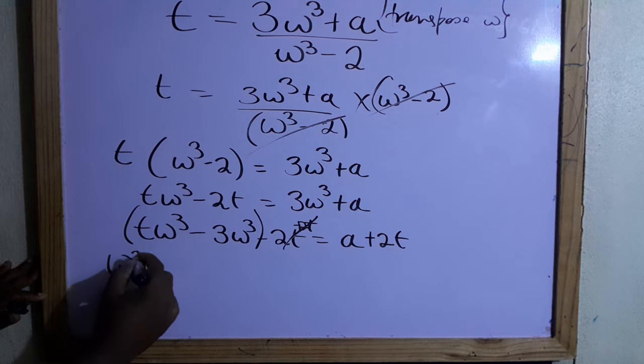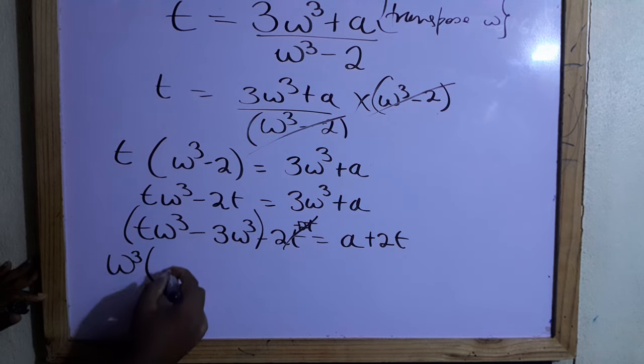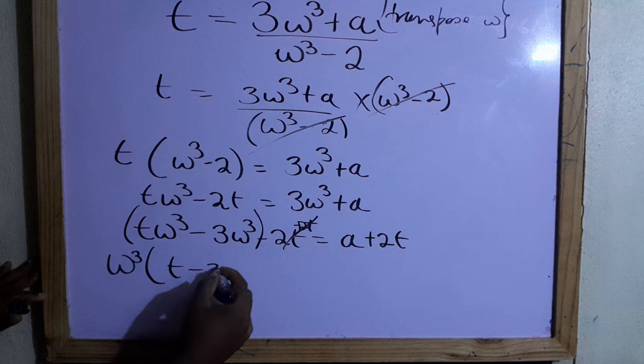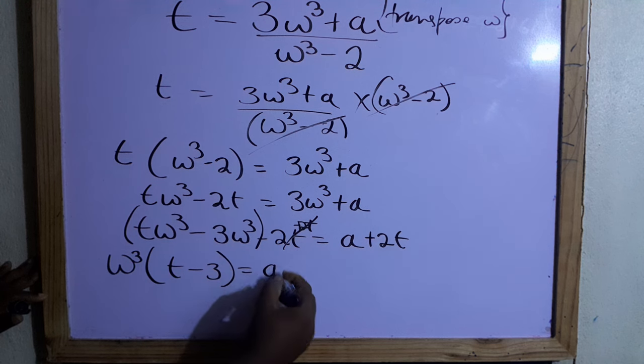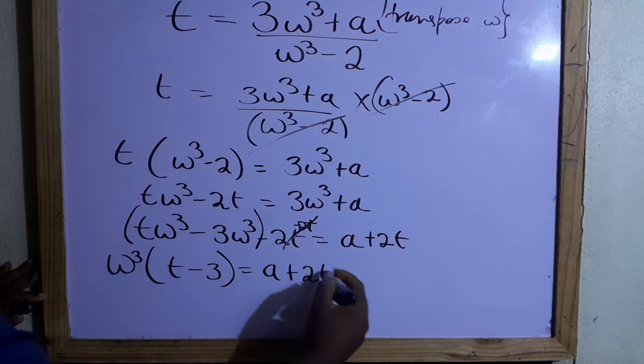That's common, so you take out the ω³. Remember you want to get ω, right? So that will leave ℓ - 3, and that will be equal to a + 2ℓ.